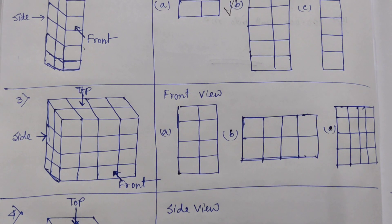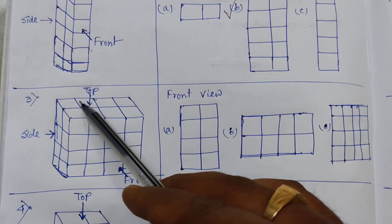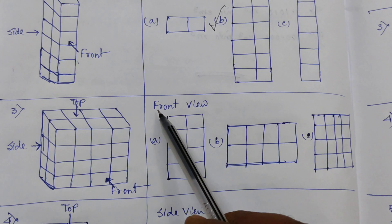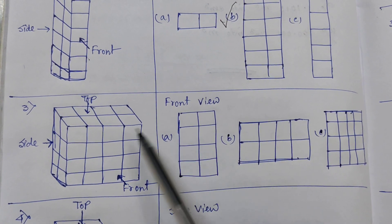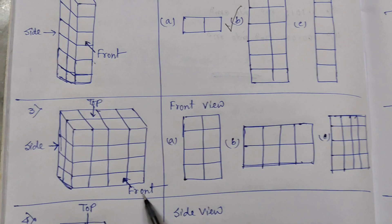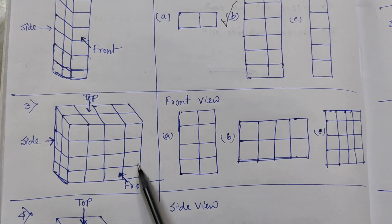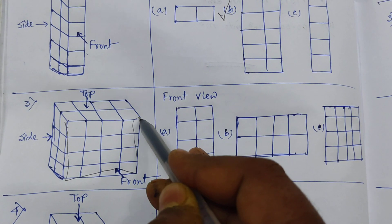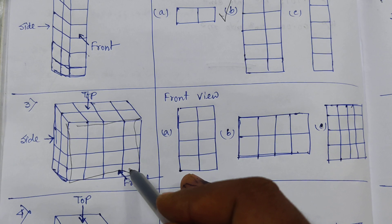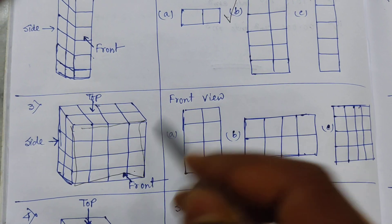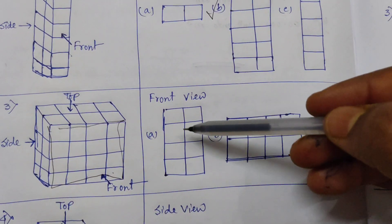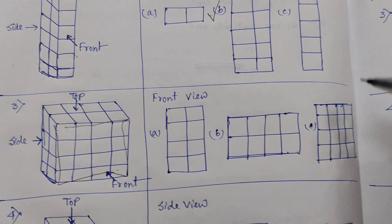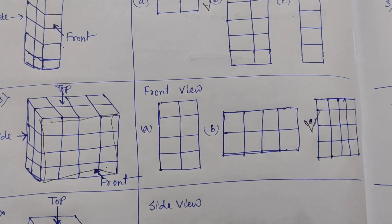Now number three — here is the object with its top view, side view, and front view. We have to choose the front view. Front view means if I look at the object from the front, we can see only this part — four rows and four columns. Option C has four rows and four columns, so Option C is the correct one.